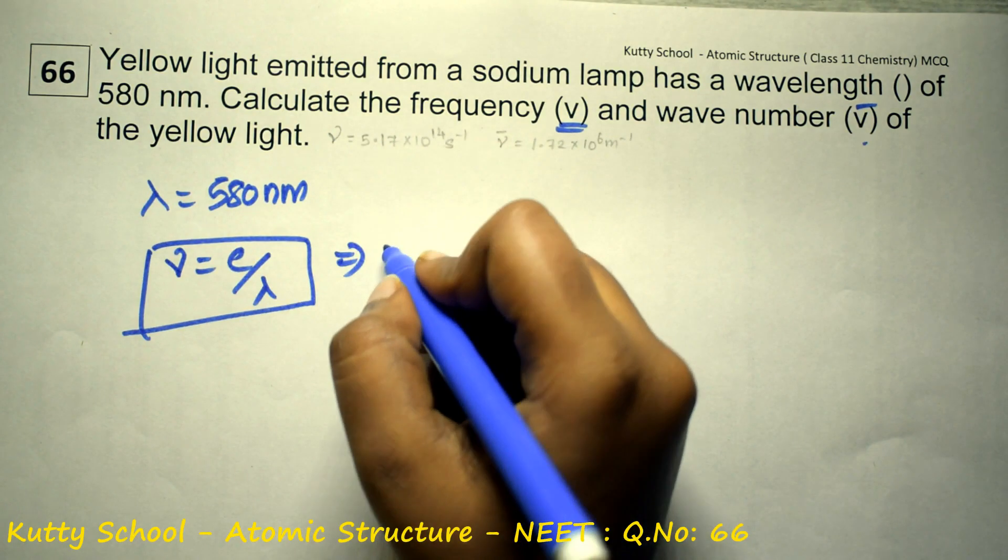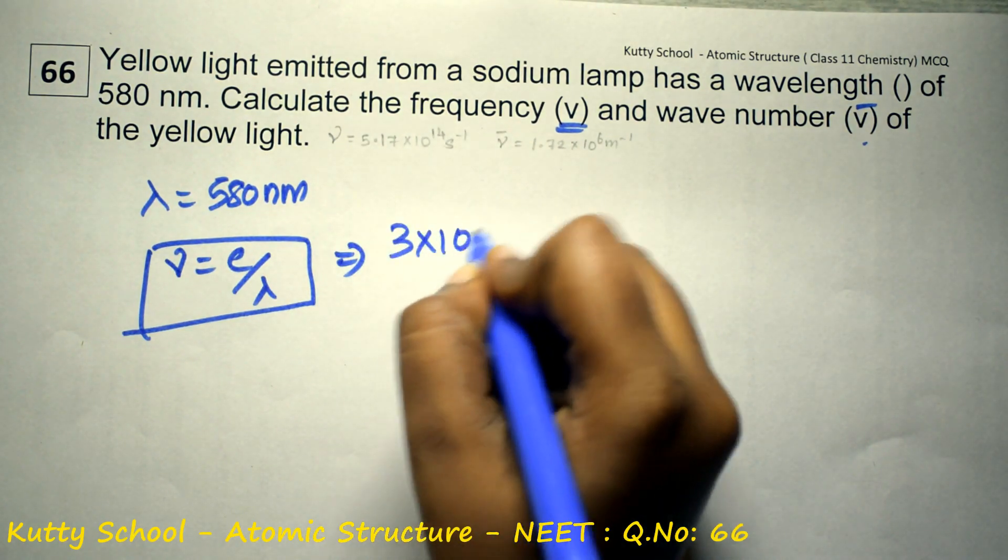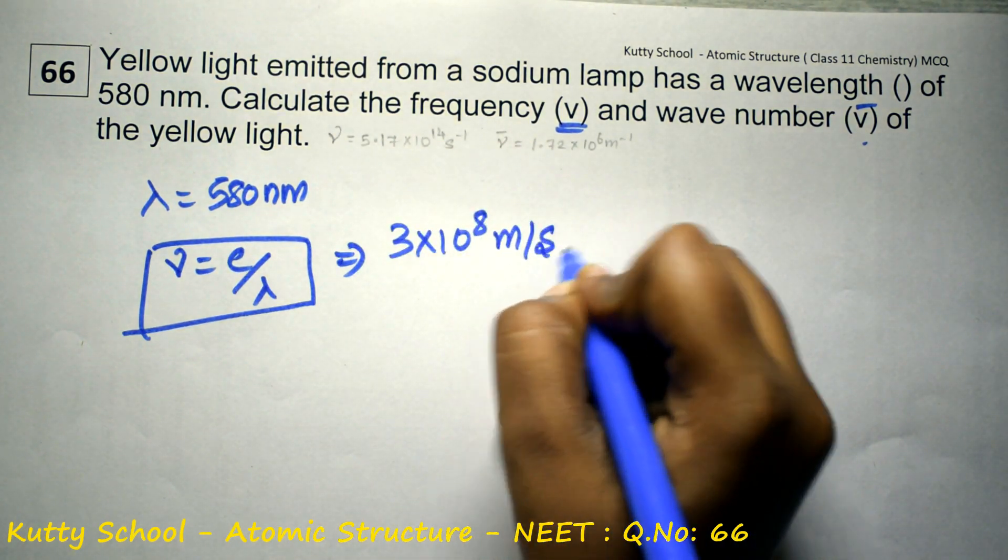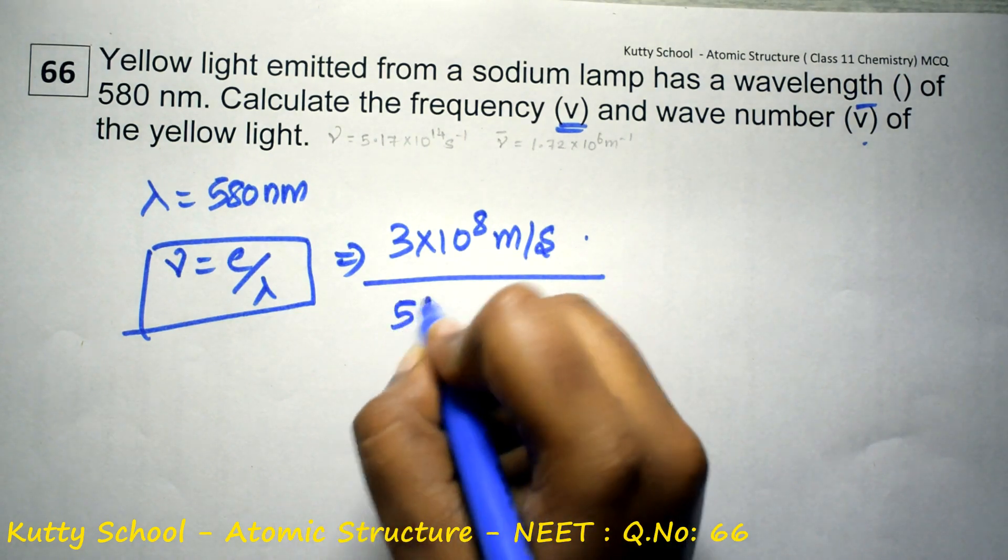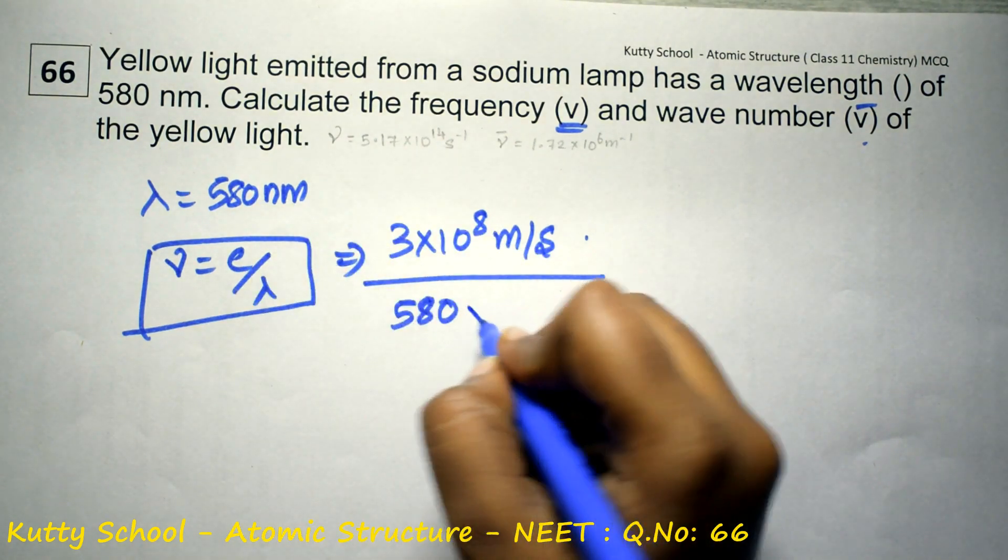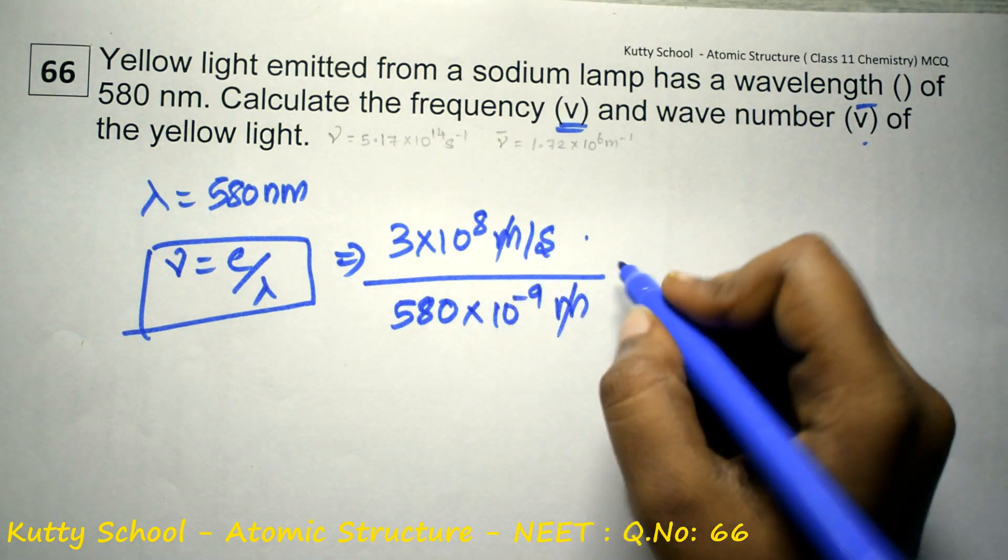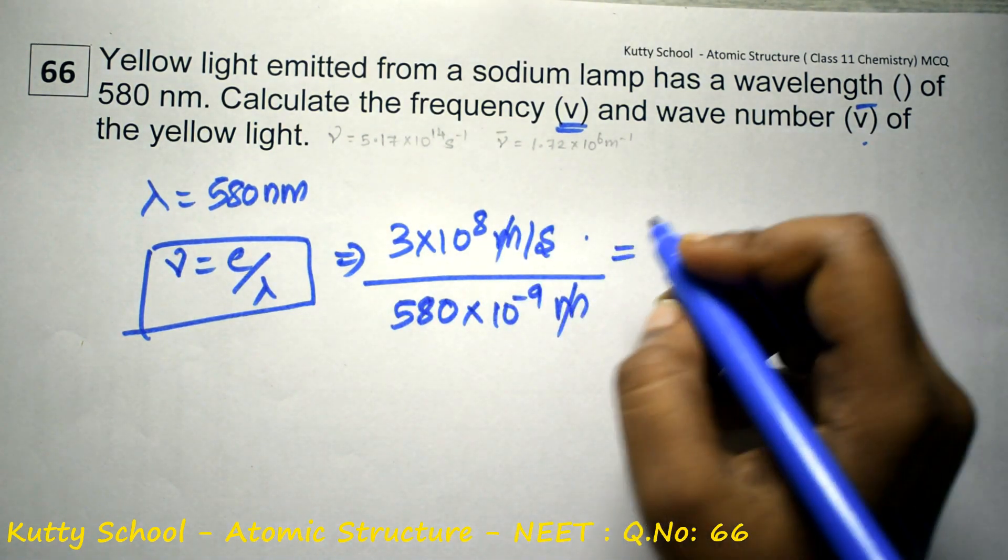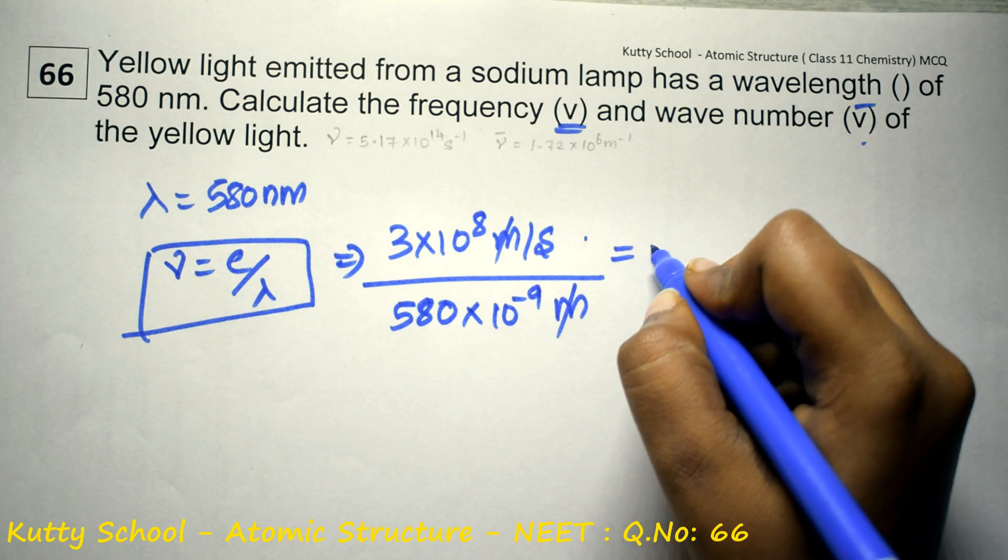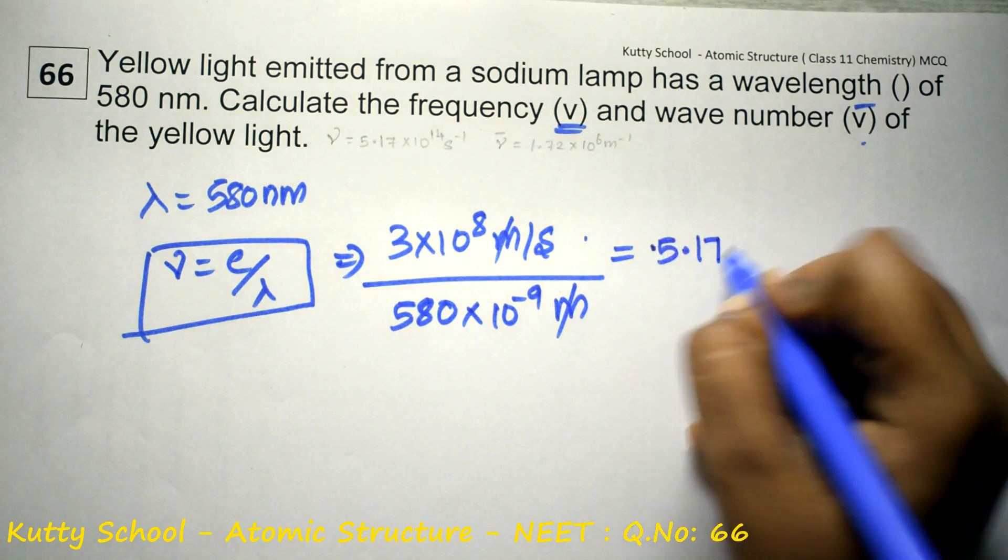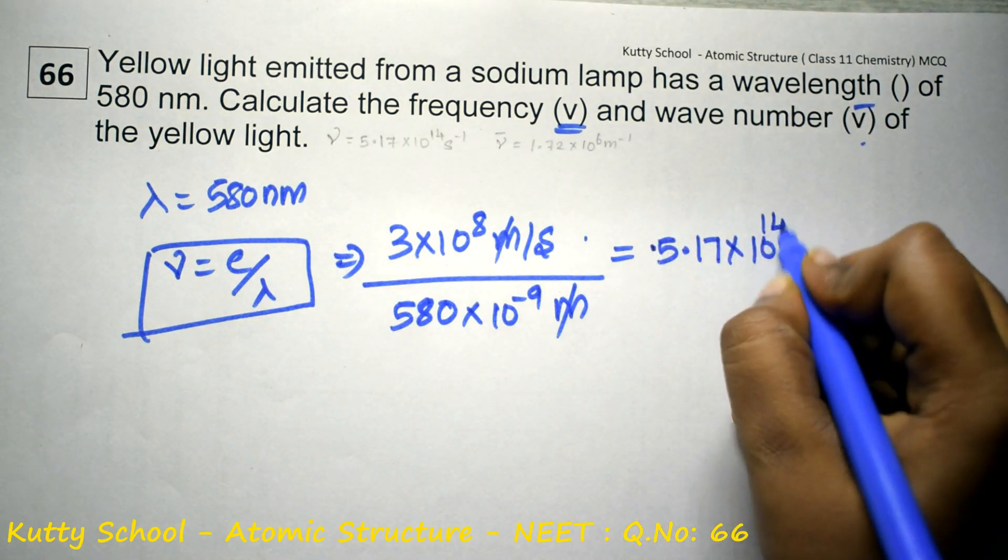Velocity of light is 3 into 10 power 8 meter per second. 580 nanometer means nano is equal to 10 power minus 9 meter. Meter to meter get cancelled, and the answer will be 5.17 into 10 power 14 second inverse.